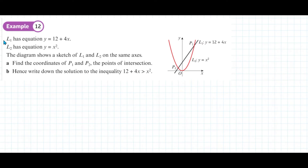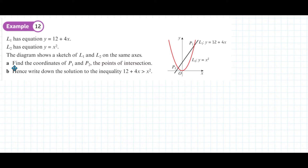This is example 12 from page 52 of the Ewan textbook. L1 has the equation y equals 12 plus 4x — the straight line on the graph — and L2 has the equation y equals x squared, the parabola. The diagram shows a sketch of L1 and L2 on the same axes, and the first part asks us to find the coordinates of P1 and P2, the points of intersection.